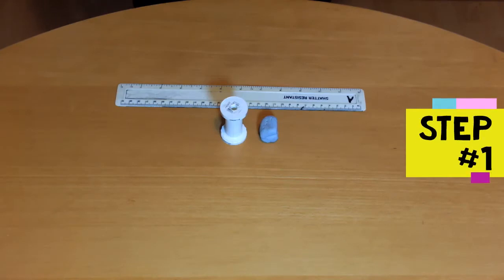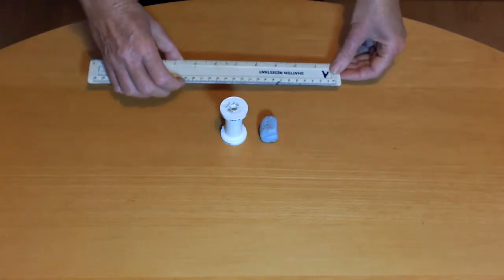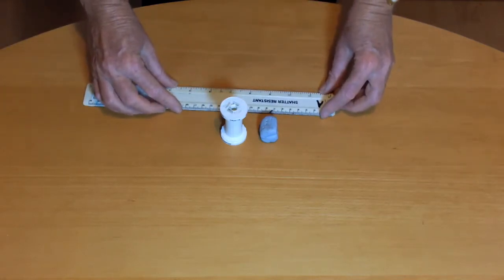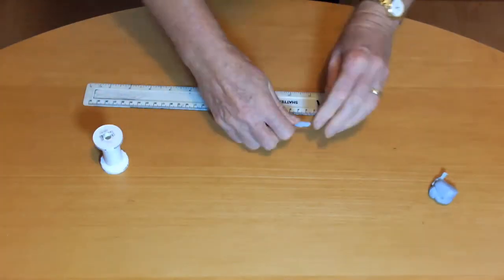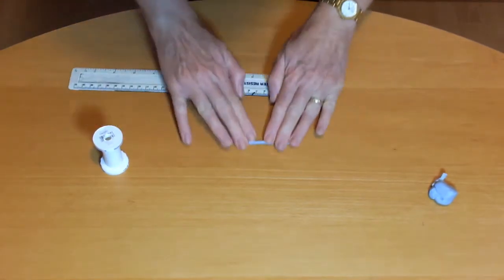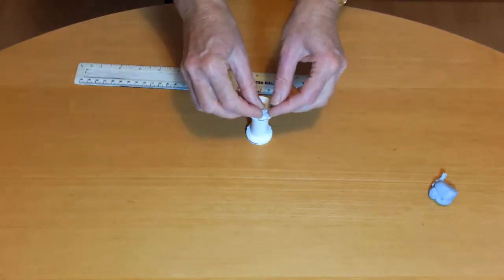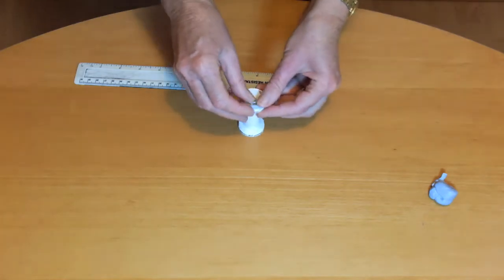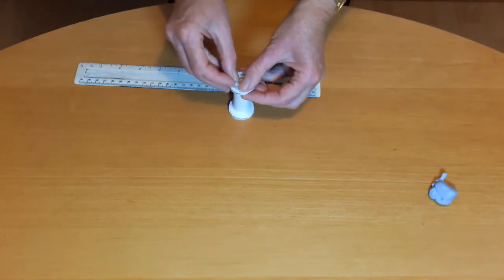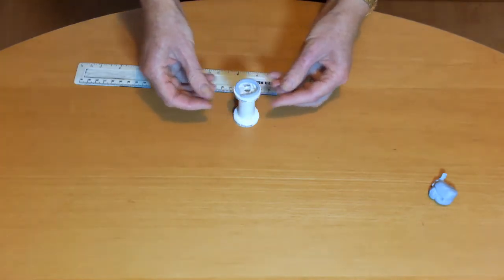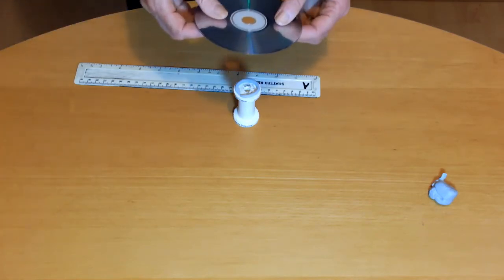Step 1 is to make the CD unit. Measure the diameter of the end of the cotton reel. Multiply this by 2½, then roll out a thin sausage of blue tack this long. Make a circle with the blue tack on one end of the cotton reel. Press a CD down hard onto it, making sure the holes in the middle of the CD and the cotton reel line up.